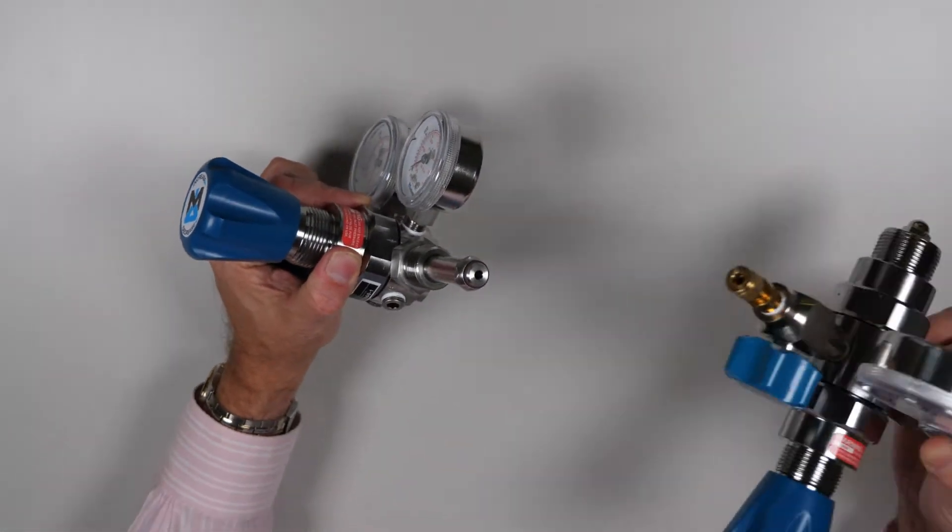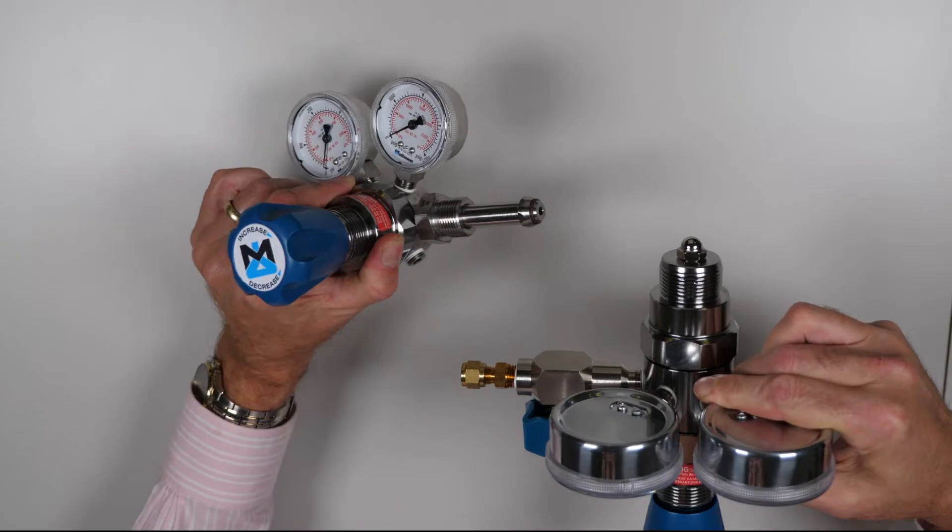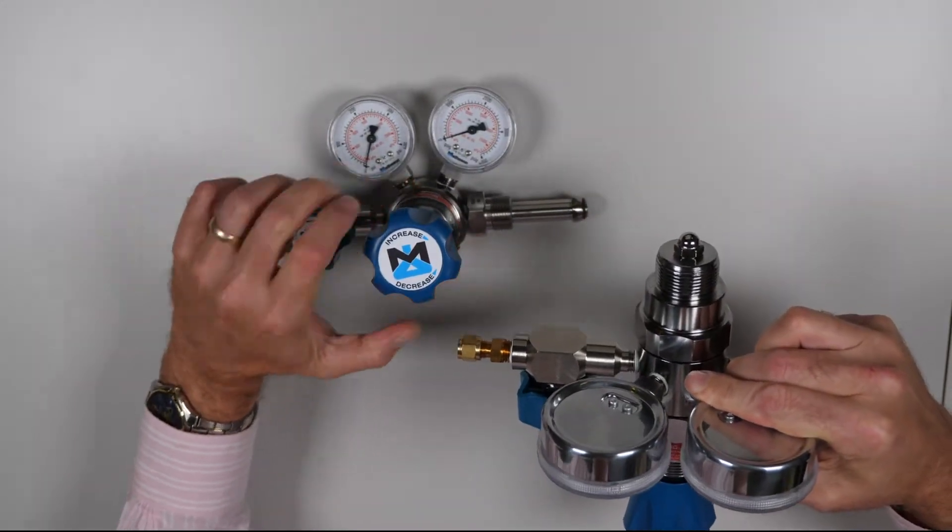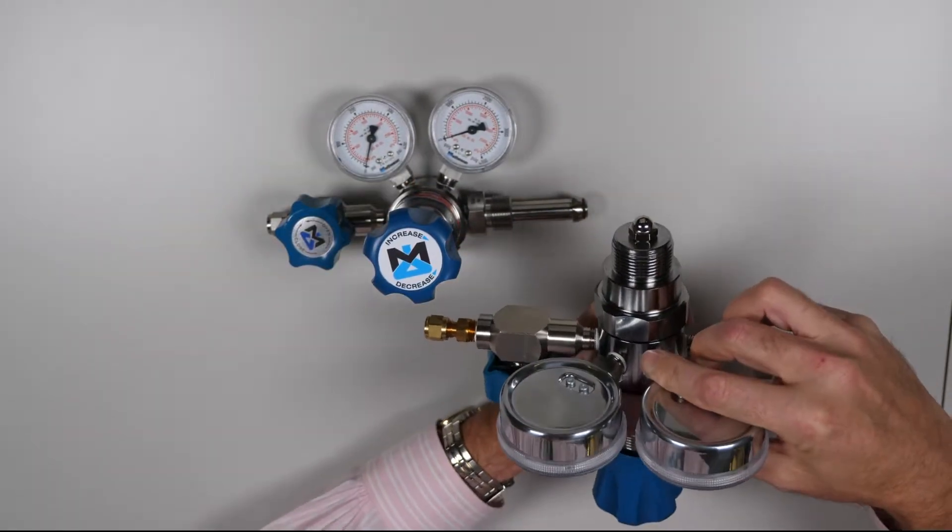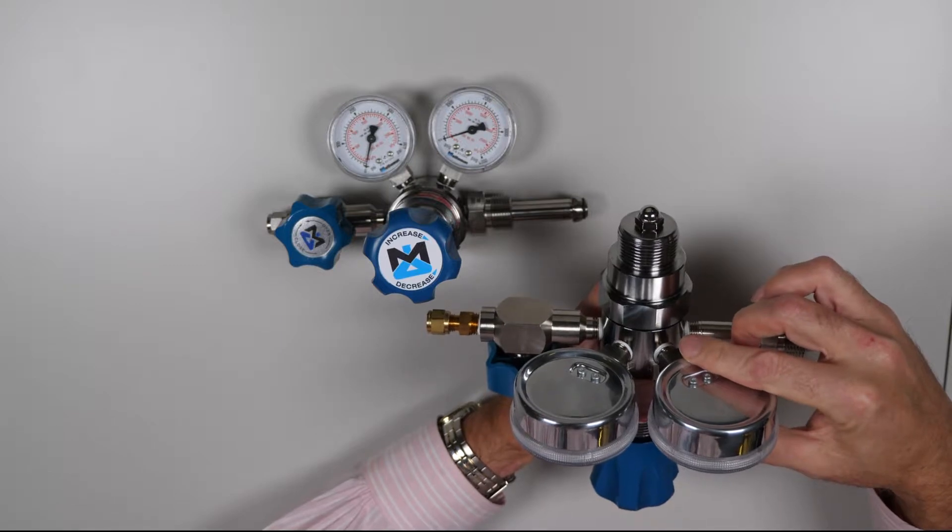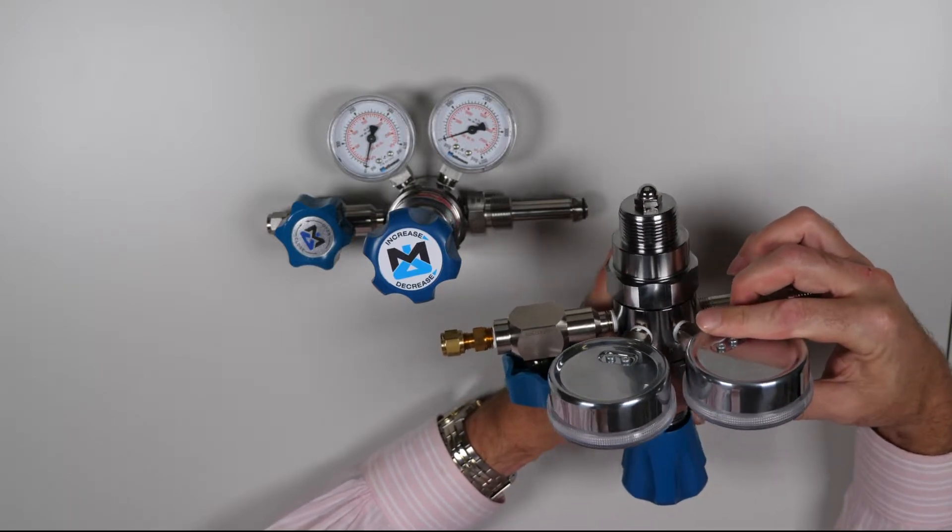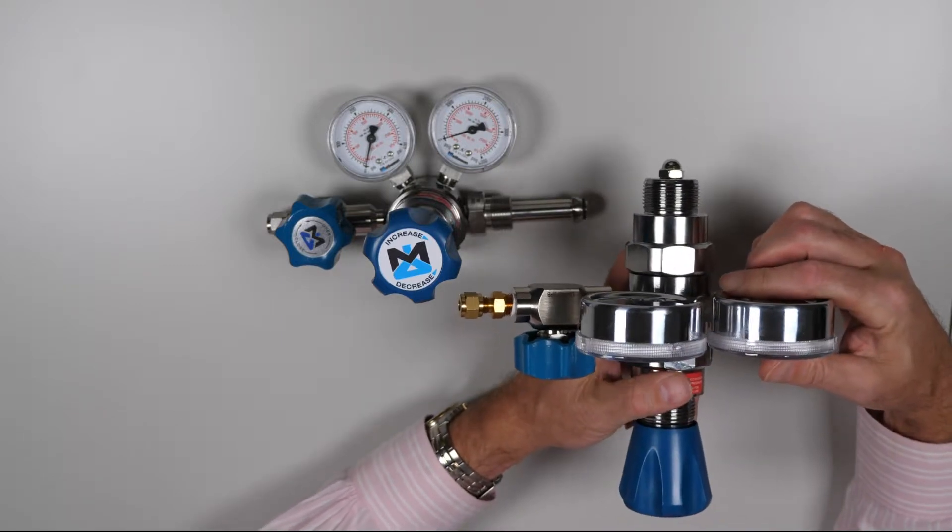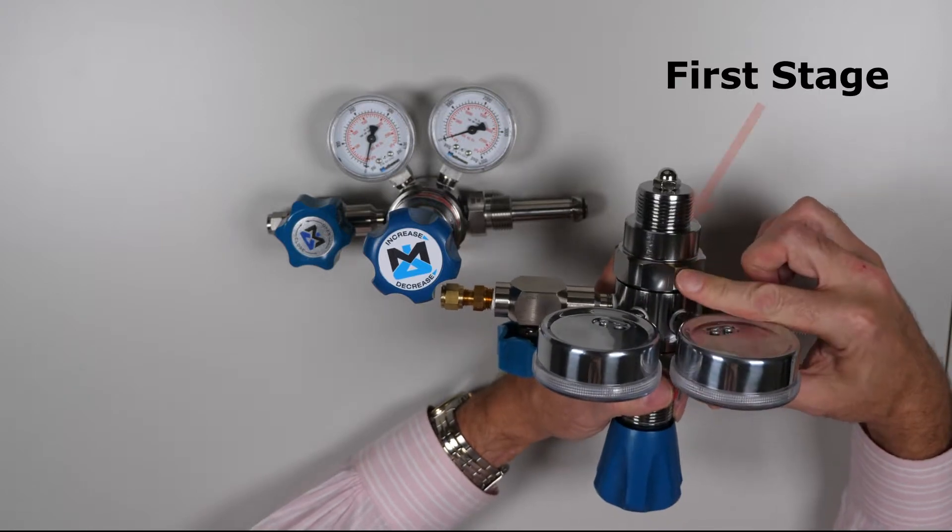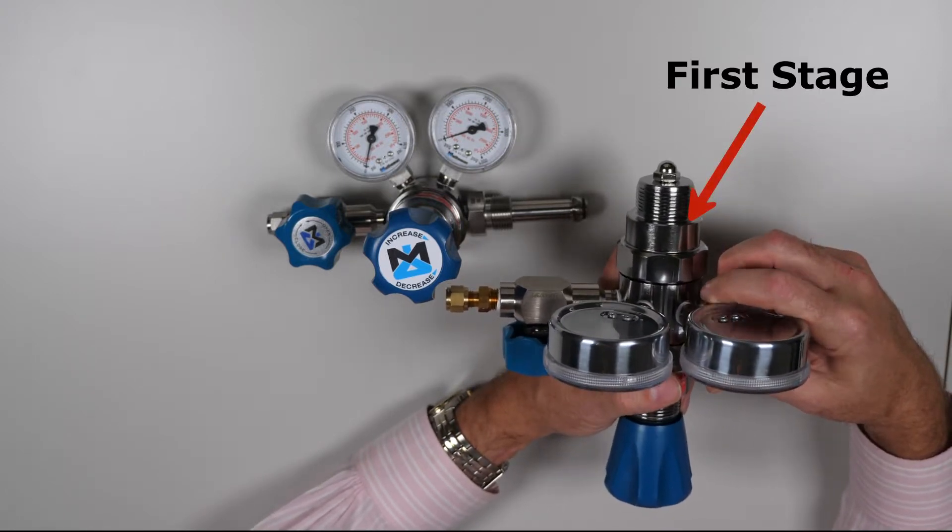This is a single-stage regulator. And this is a dual-stage regulator. Dual-stage regulators are like two regulators in one body and will offer a more stable delivery pressure over the life of a cylinder. The first stage of a dual-stage regulator is set for about 300 psi.